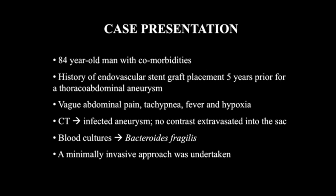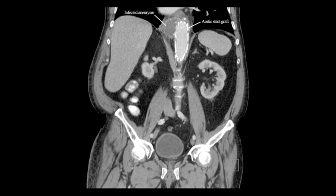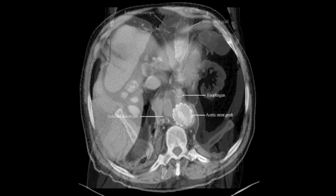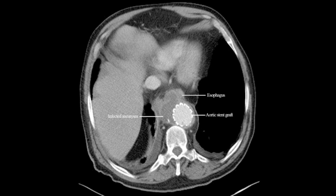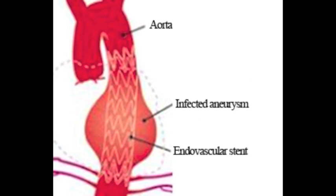A minimally invasive approach was undertaken. CT scan of the abdomen in coronal view shows the stent grafts in place with surrounding infected aneurysm. Similarly, in the transverse view, the stent grafts and infected aneurysm are seen. Illustratively, we can see the aortic stent graft in place with surrounding excluded infected aneurysm.